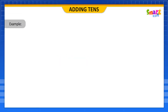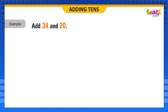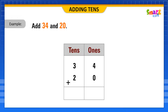Look at this example. Add 34 and 20. First, write 34 and 20 in the 10s and 1s columns correctly.